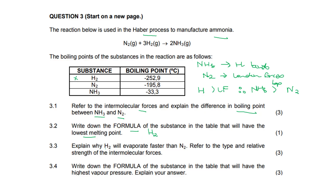3.3, explain why hydrogen will evaporate faster than nitrogen. Refer to the type and relative strength of the intermolecular forces — they want three marks. Looking at hydrogen and nitrogen, both of them have weak London forces. But nitrogen has a larger molecular mass, or is a larger molecule than hydrogen, and therefore will have stronger intermolecular forces. That is why hydrogen will evaporate faster than nitrogen.